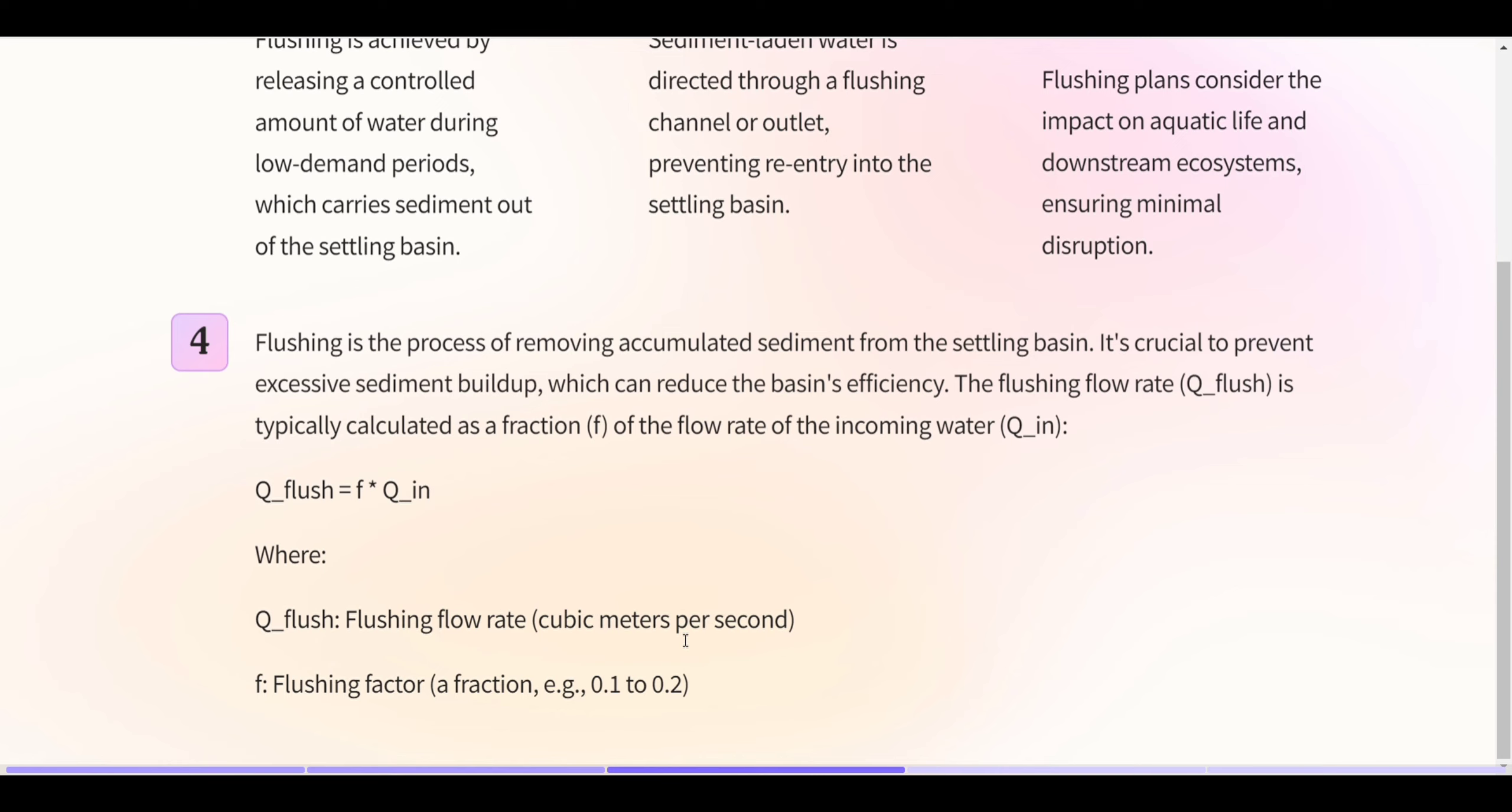Flushing is the process of removing accumulated sediment from the settling basin. It's crucial to prevent excessive sediment buildup, which can reduce the basin's efficiency. The flushing flow rate is typically calculated as a fraction of the flow rate of the incoming water: Q_flush equals F times Q_in, where Q_flush is the flushing flow rate and F is the flushing factor.